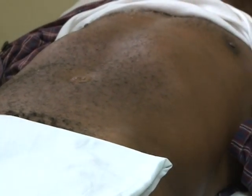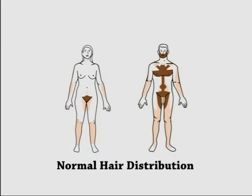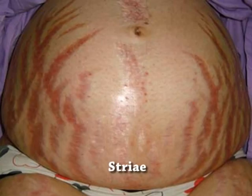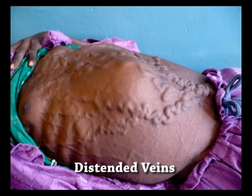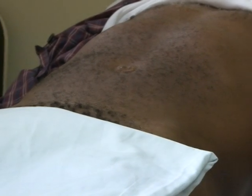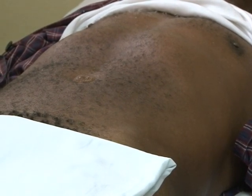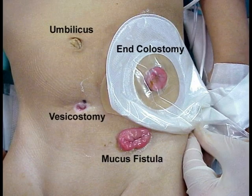We also take note of the distribution of hair pattern on an abdominal exam. Note must be made of skin lesions such as neurofibromas, striae, and skin warts. Distended veins must be noted. We take note of the movement of the abdomen during respiration, which may be decreased in peritonitis. Obvious pulsations must also be commented on. Herniae are usually examined with the abdomen; we ask the patient to cough to demonstrate any umbilical or other herniae.